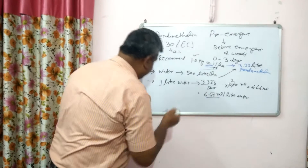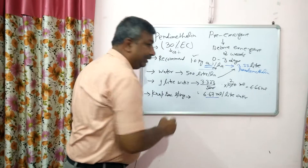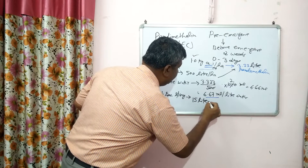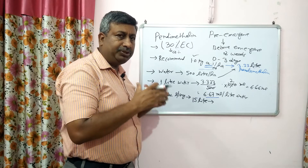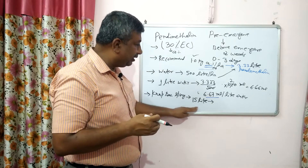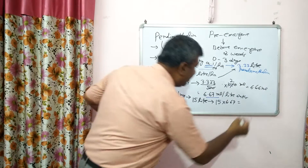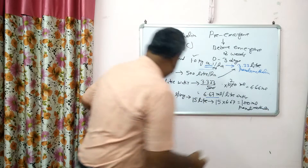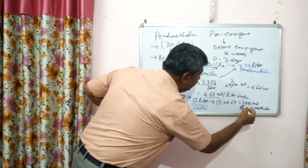In case of a knapsack sprayer — which farmers commonly use — the tank volume is 16 liters, but generally 15 liters of water is used. For 15 liters: 15 multiplied by 6.67 ml is approximately 100 ml. So in a knapsack sprayer with 15 liters of water, mix 100 ml of pendimethalin.